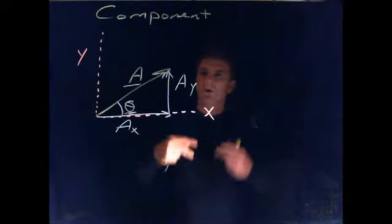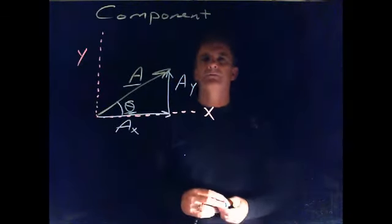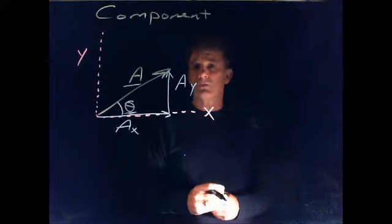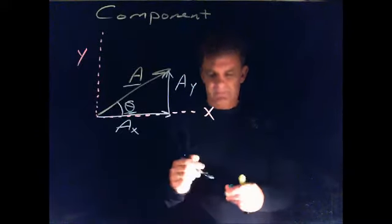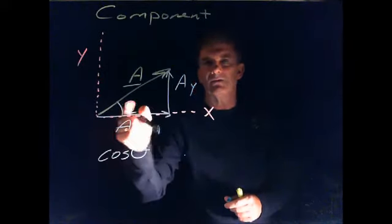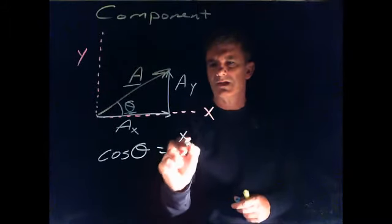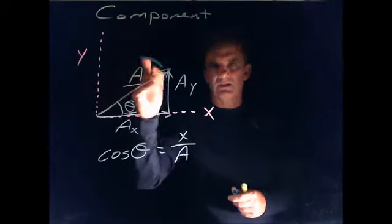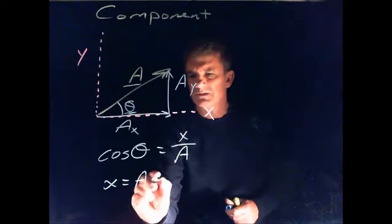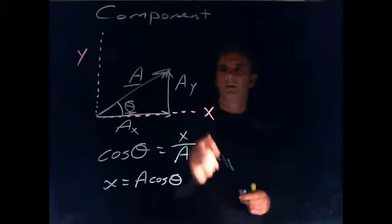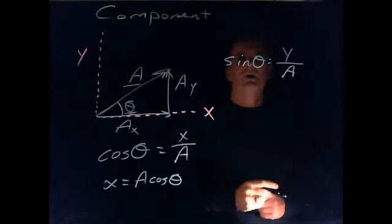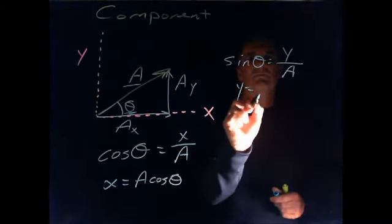And these two pieces of information are typically given to you as part of these vector problems. And so to calculate the component in the X direction, and I'm not going to write it as AX, I'm just going to write it as X, what we know is that the cosine of this angle, cosine is adjacent, my X side over my hypotenuse, A. The length of my vector is the hypotenuse. And then we solve for X. X is equal to A times cosine theta. My Y side is the sine side.